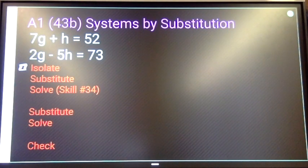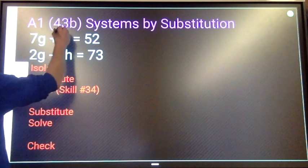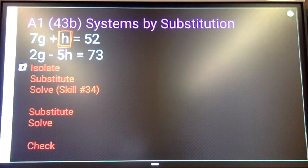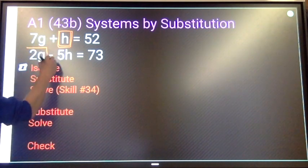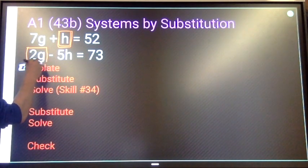You want to find what is the easiest variable to isolate, the easiest variable to get by itself. I'm looking for something like this—h is almost already by itself—or I could be looking for something like this, right? 2g, it's easy to divide by 2 if I need to, so I could get g by itself.